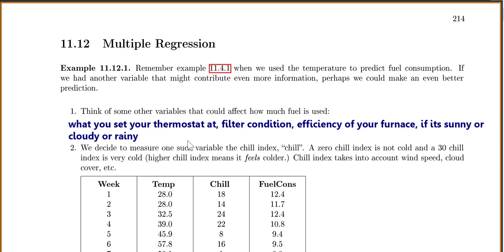So we decided to measure one such variable, which is the chill index, called chill. A zero chill index means it's not cold, and a 30 chill index is very cold. So a higher chill actually means it feels colder. Chill index takes into account wind speed and cloud cover.